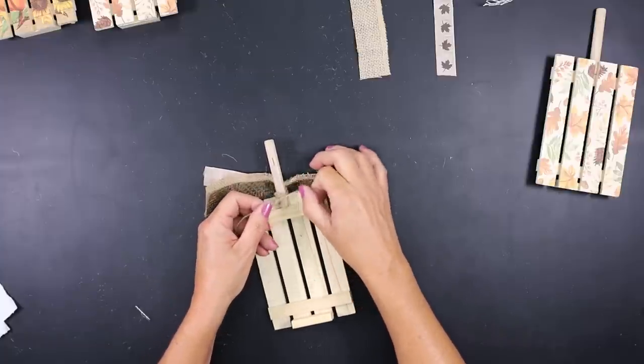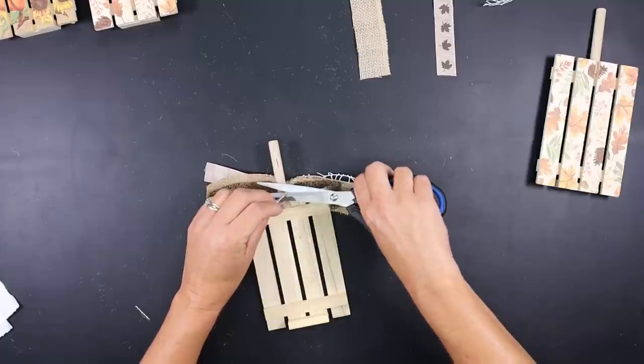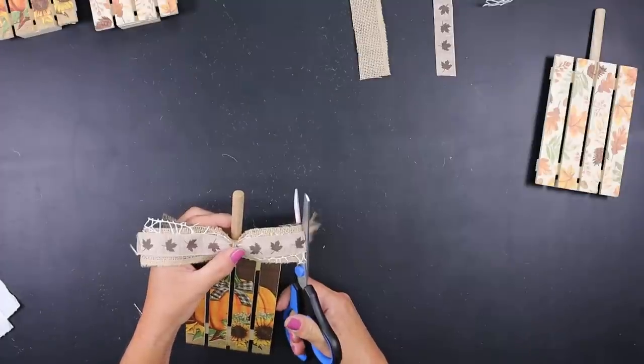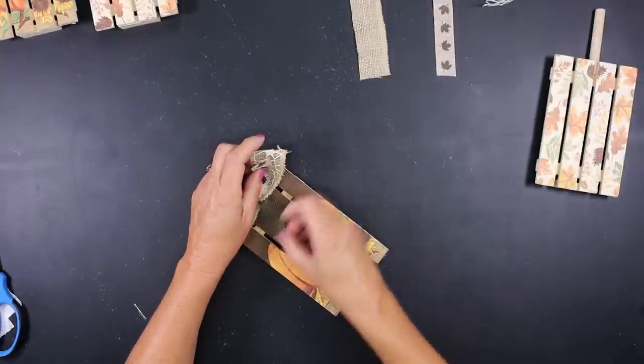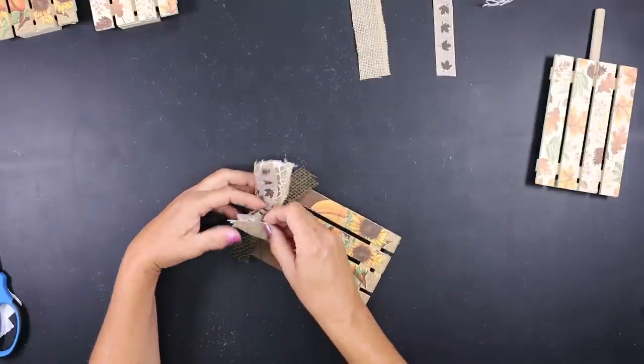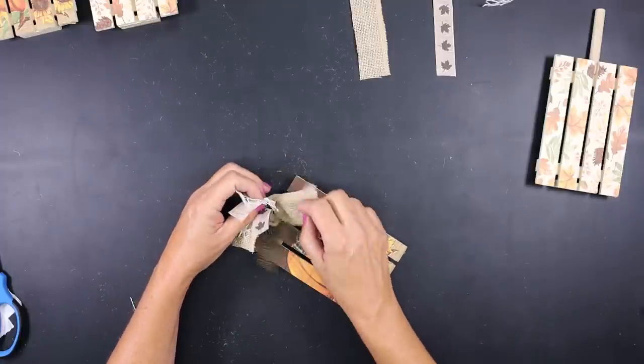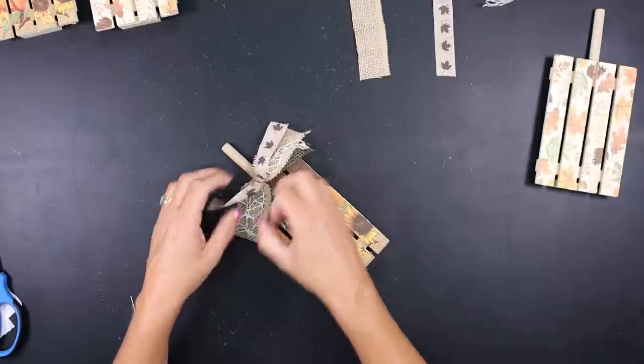Now I cut my ribbon a little too long. I wanted it a little bit shorter so I do trim some off of each side then separate my ribbons out to kind of fluff up that bow. You'll want to make a bow for each one of your palettes and attach them to the stems.